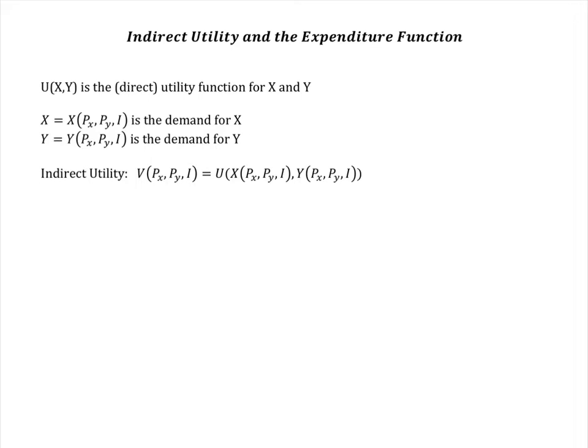Consider an example using one of the most commonly used utility functions in consumer choice theory, the Cobb-Douglas. Let utility U1(X,Y) equal 5X³Y⁴. The monotonic transformation U = 1/5 U^(1/7) can be used to yield an expression where the exponents sum to 1.